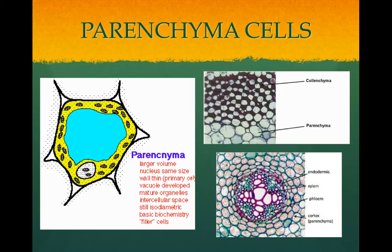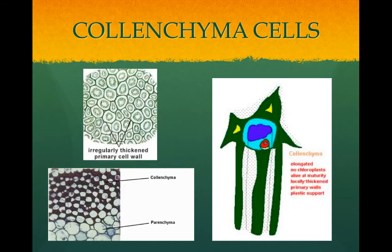Collenchyma cells have thick primary cell walls only. They are for support in parts of the plant that are still growing.